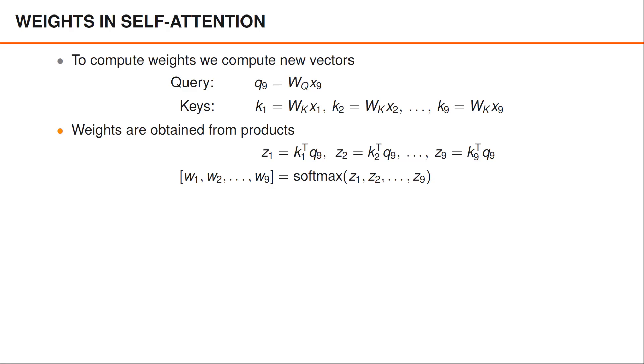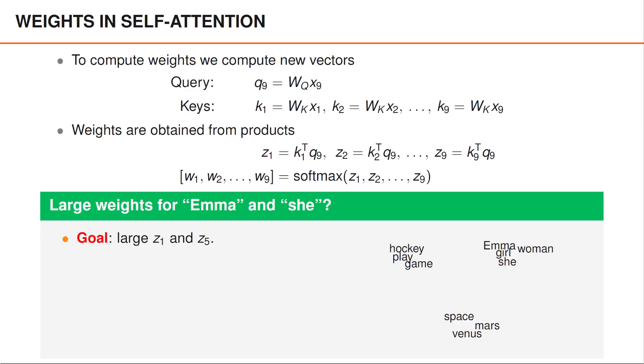But this is probably not true after applying these transformations. In an attempt to gain some intuition, let us reason about if we can select the matrices WQ and WK to yield large weights for the words Emma and She in our example.